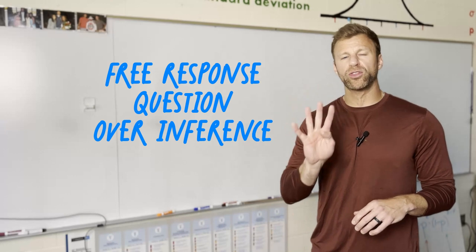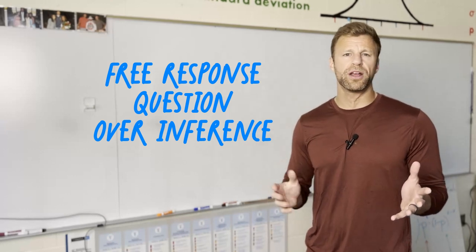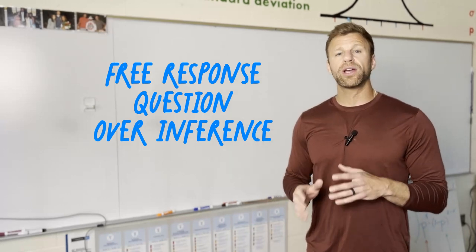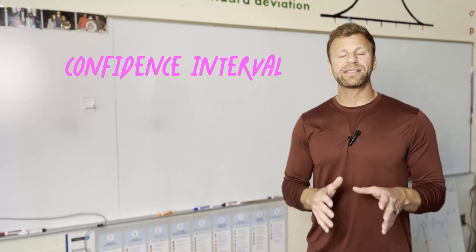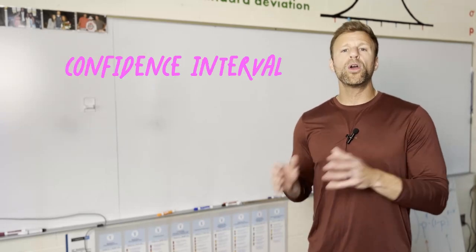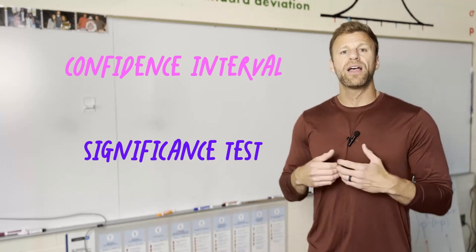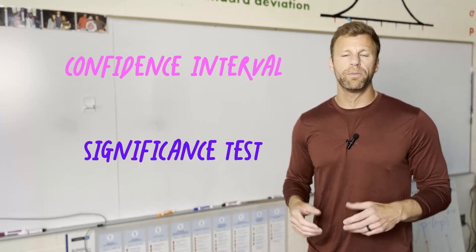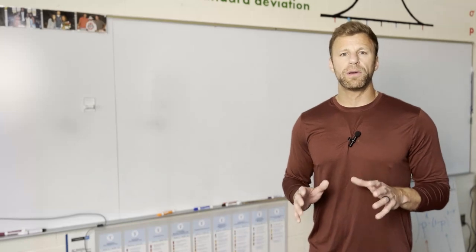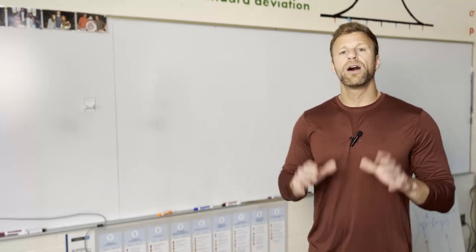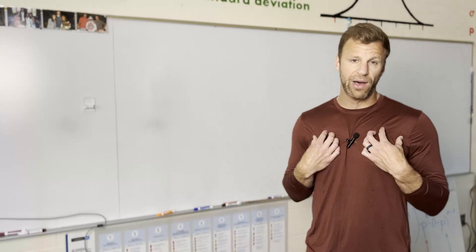Typically this is the fourth question, or at least it has been the last couple years. On this question you're either going to have to do a confidence interval to estimate a population parameter, or you're going to have to do a significance test to determine if you have significant evidence that an alternative hypothesis is true. Here's the key thing you want to keep in mind for either one of these techniques: four steps, at least that's how I like to think about it.